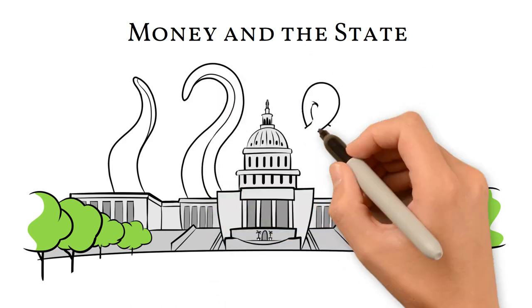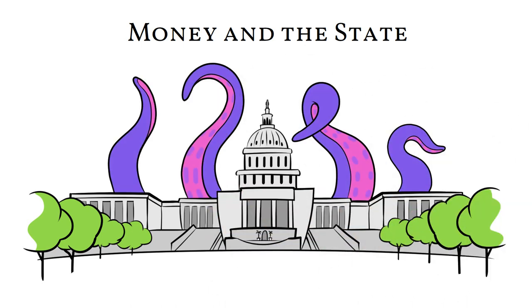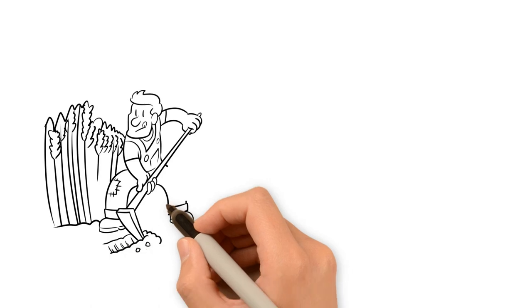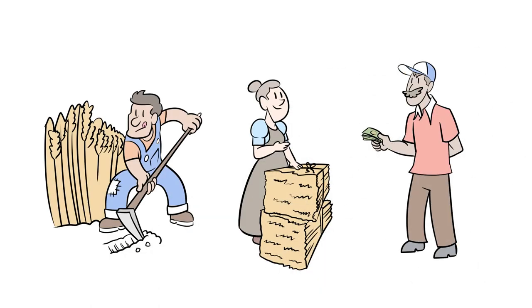Consequently, governments face an economic problem different from that of everyone else. Private individuals who want to acquire more goods and services from others must produce and sell more of what others want.